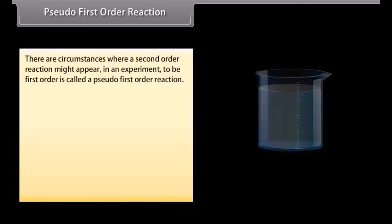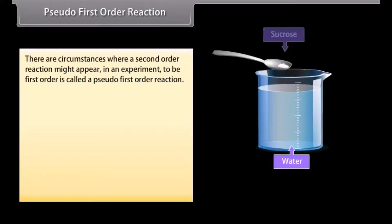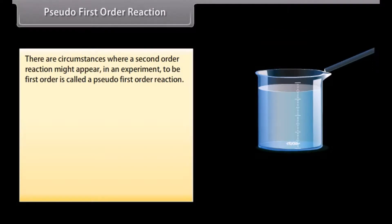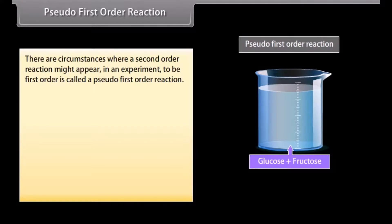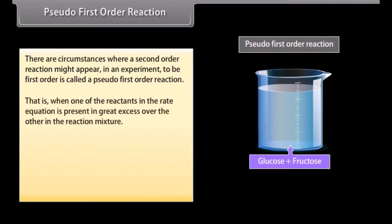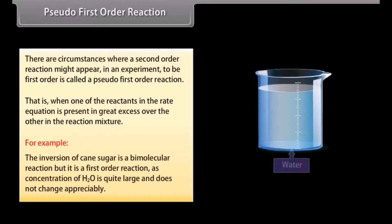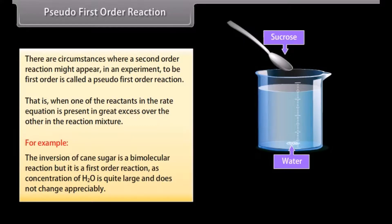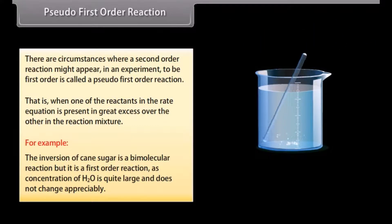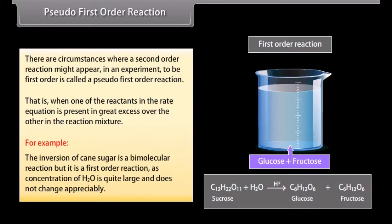Pseudo-first-order reaction. There are circumstances where a second-order reaction might appear in an experiment to be first-order; this is called a pseudo-first-order reaction. This occurs when one of the reactants in the rate equation is present in great excess over the other in the reaction mixture. For example, the inversion of cane sugar is a bimolecular reaction but it is a first-order reaction, as the concentration of H2O is quite large and does not change appreciably.